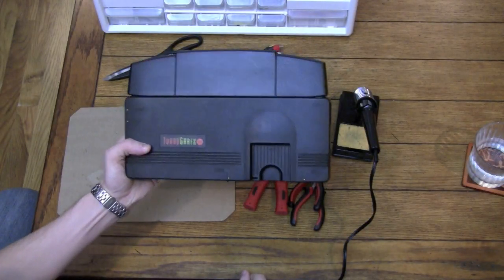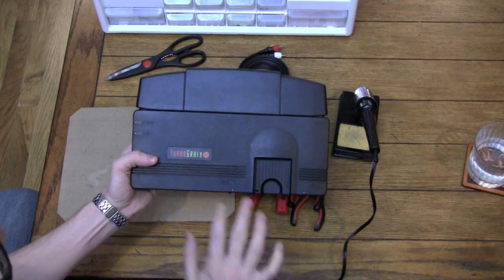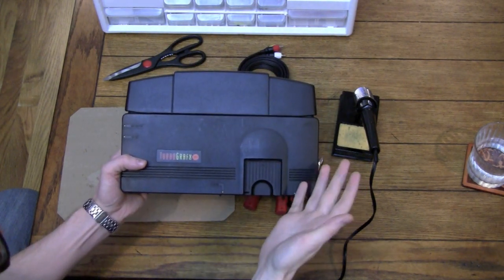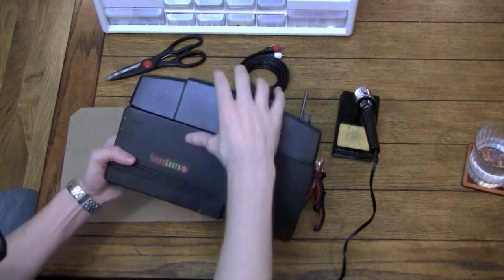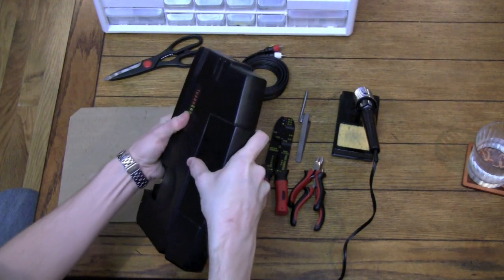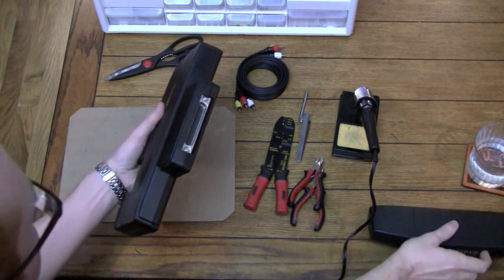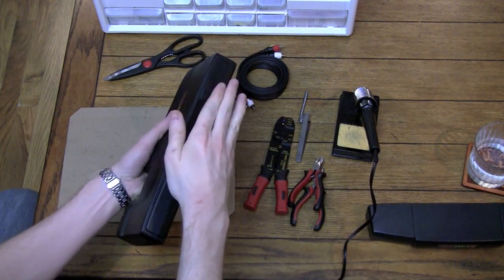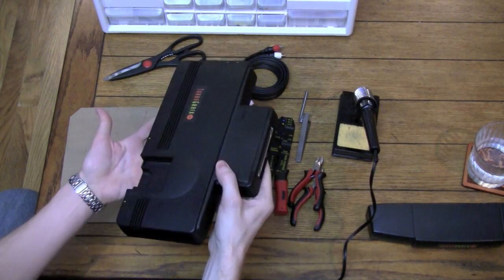Now, some of you who are more familiar with this original TurboGrafx may be thinking, wait a minute, I don't have to make my own composite output. They make something called the Turbo Booster that goes on the back of this and it has composite out. So why don't I just get one of those?